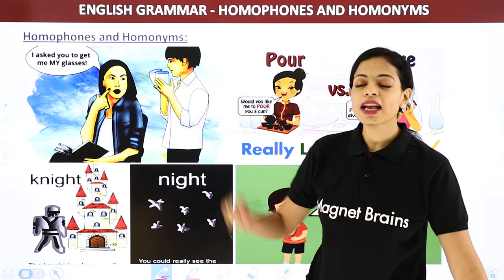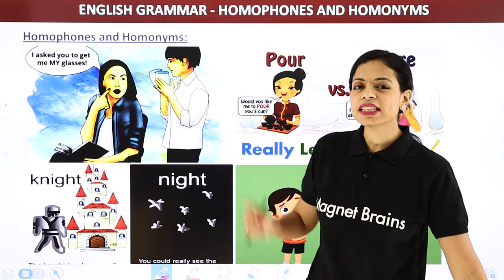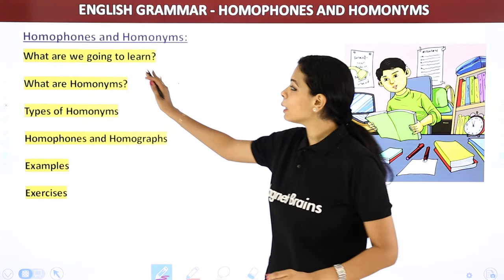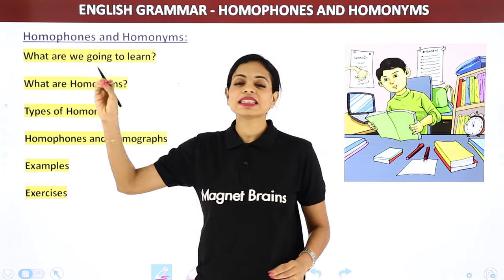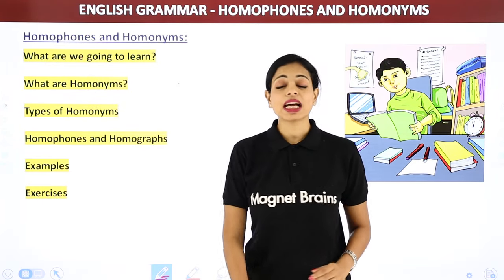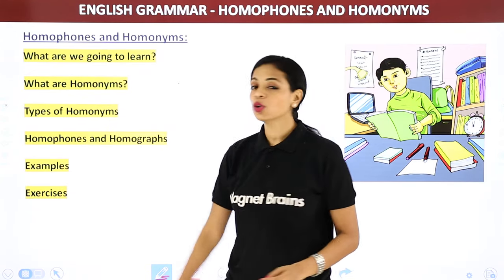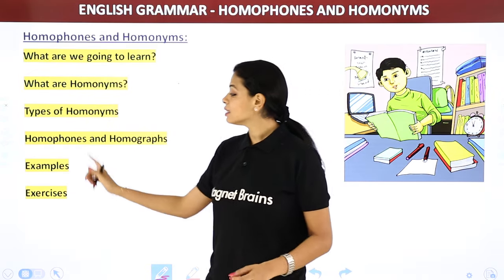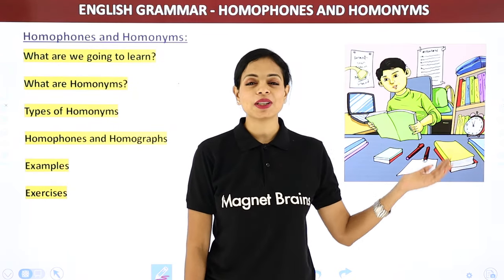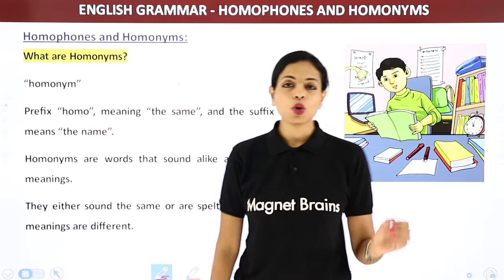So these are some examples of how these confusing words trick us. In this video we are first going to learn what homonyms are, then the types of homonyms — homophones and homographs — followed by examples and a lot of exercises. Now let's start with homonyms.